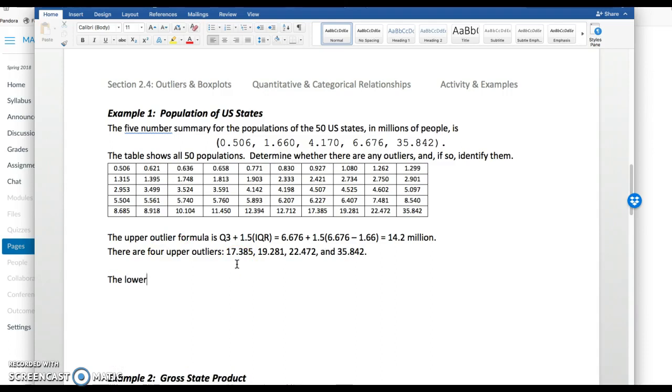And then we need to see if there's any lower outliers. The lower outlier formula is Q1 minus 1.5 times the interquartile range IQR. So that's going to be 1.66 is Q1 minus 1.5 times 6.676 minus 1.66. And if you throw that in your calculator, you get actually a negative number. It's minus 5.864 million, which the formula makes sense, but that minus doesn't really.